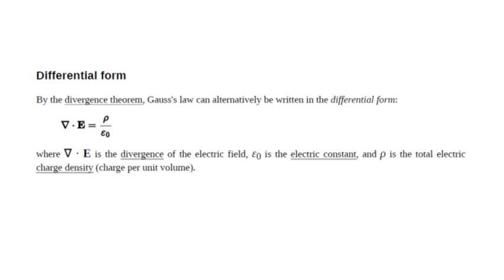Here rho is the total electric charge density — charge per unit volume. Del dot E is the divergence of the electric field, and epsilon zero is the electrical constant, related to permittivity.